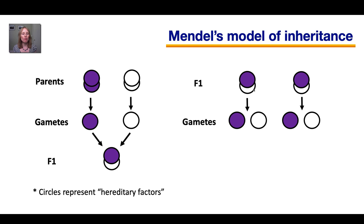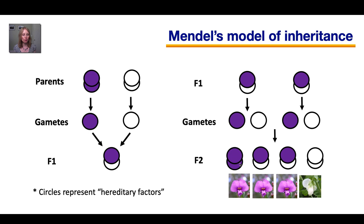So how does this explain the F2 results? When we cross two F1 hybrids, they can pass down to the gametes either the purple factor or the white factor. During fertilization, the gametes combine and you could have two purples, two whites, or a white with a purple. All those different possible combinations give you the following results: if the flower inherits two purple, it will be purple; if it inherits purple and white, purple seems to dominate, so it will also be purple. Only if the offspring inherits the white factor from both parents — egg and sperm both having the white factor — will it be white. This explains the three to one ratio.